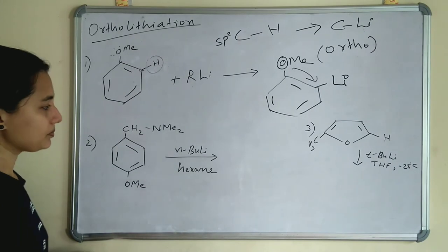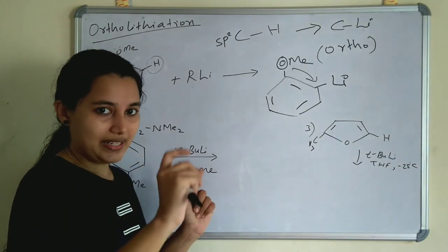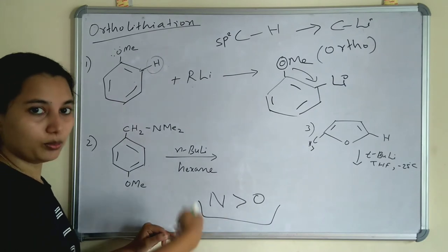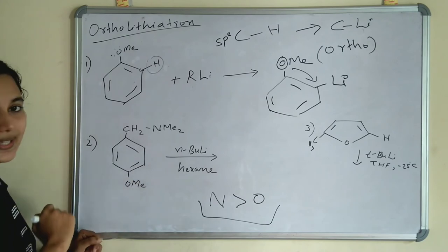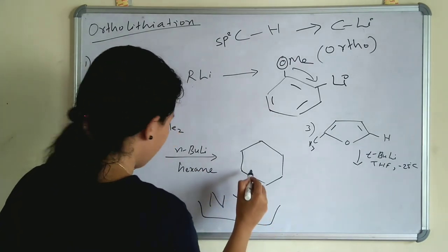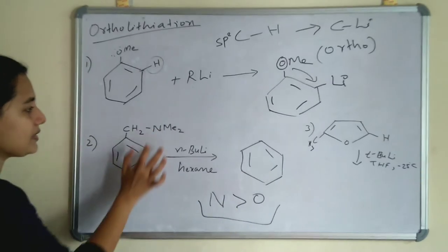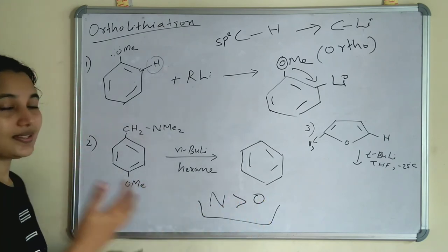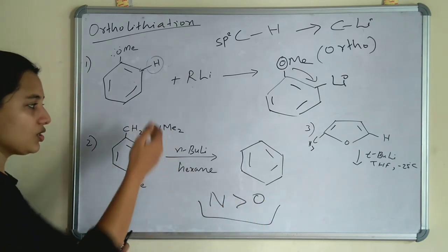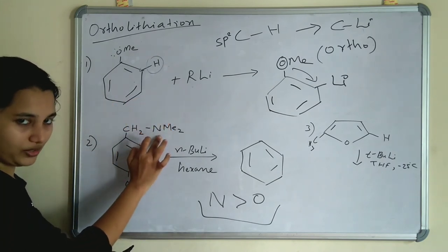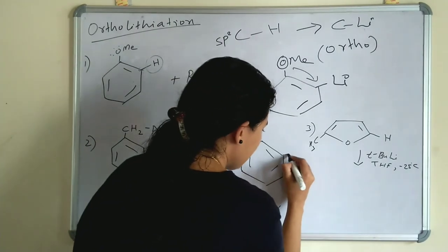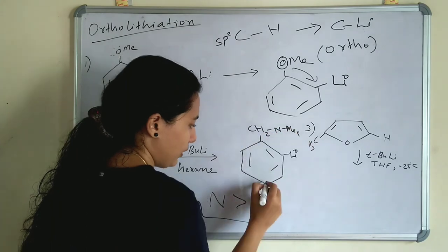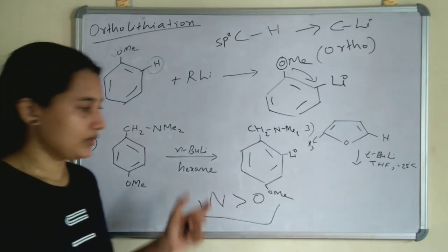For ortholithiation, the reactivity preference is nitrogen > oxygen — nitrogen directs ortholithiation faster than oxygen. In the second example, both OMe and CH₂NMe₂ groups are present. Since nitrogen has more preference than oxygen, we take the ortho position to nitrogen, not oxygen. The C–H bond at the ortho position to nitrogen is replaced by C–Li, and the rest of the compound (NMe₂ and OMe) is unchanged. This is the product of ortholithiation.